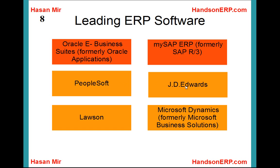PeopleSoft had already acquired JD Edwards before Oracle Corporation purchased PeopleSoft. Therefore, Oracle Corporation is now maintaining all three ERP systems: Oracle, PeopleSoft, and JD Edwards. Lawson is also a big player in the ERP market. Microsoft also makes an ERP software, though it is not truly enterprise-scalable; it is used by small to medium-sized companies and is called Microsoft Dynamics, formerly known as Microsoft Business Solutions.